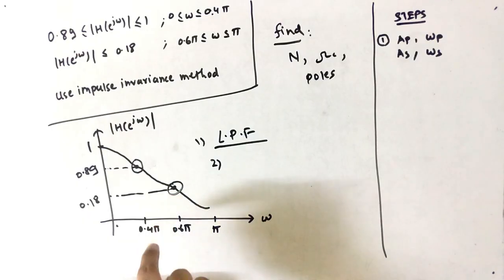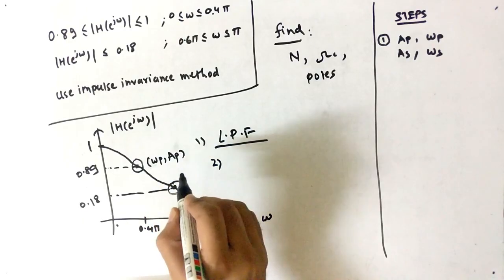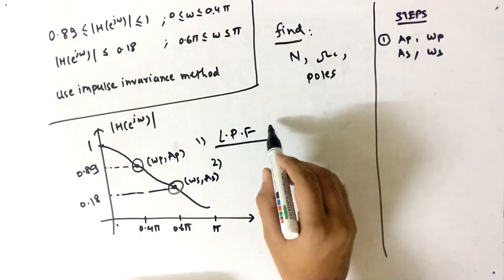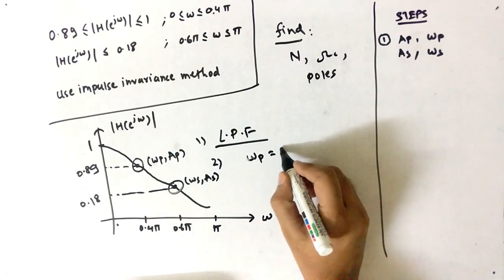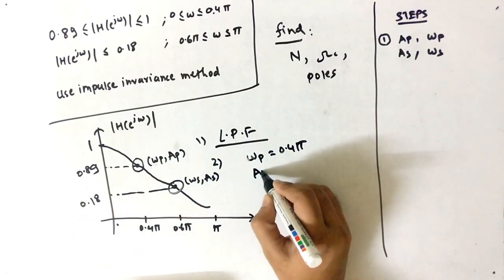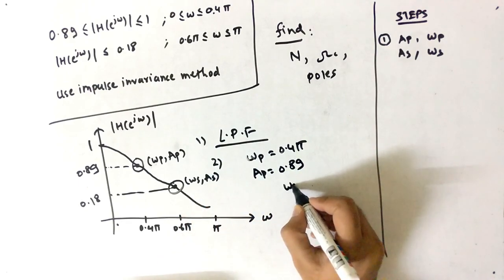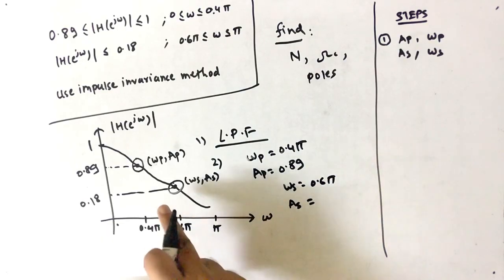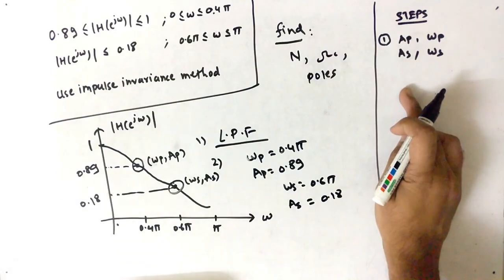Mark the two key points on the graph. The passband frequency ωp equals 0.4π, and the respective passband attenuation ap equals 0.89. Similarly, the stopband frequency ωs equals 0.6π, and the stopband attenuation as equals 0.18. That completes step one.